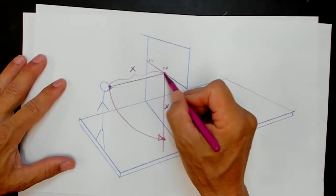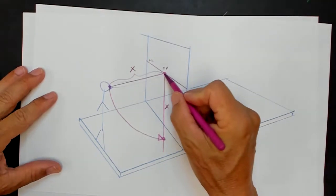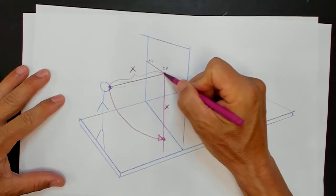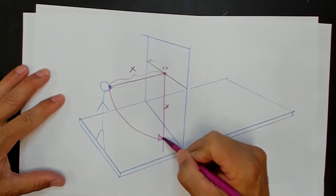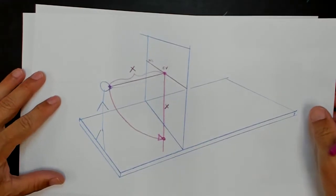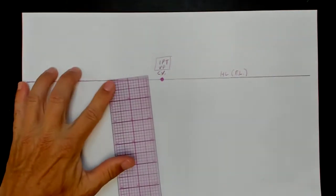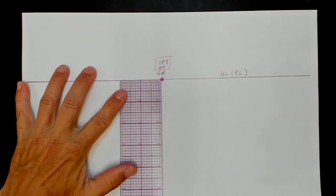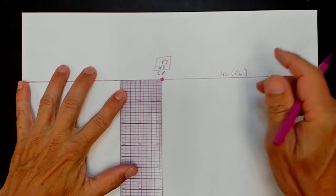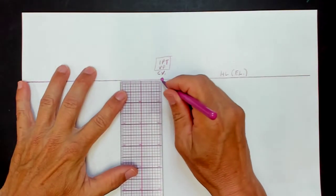If I wanted the viewer to be six inches from the picture plane, working at a scale of one-to-one, I would just measure down here six inches and put a dot, and that is the station point. Let's make the viewer six inches away from the picture plane. We have to make it smaller than that because that's off my paper. Let's make it four inches away from the picture plane.